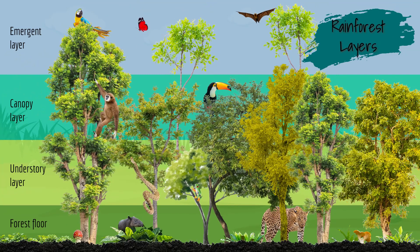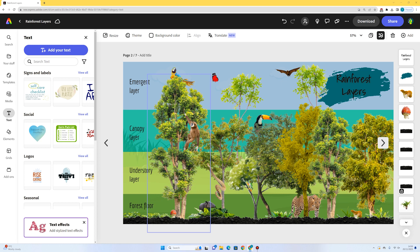There's our rainforest layers diagram. We've got shrubs and the forest floor with dirt along the bottom. In the understory layer we have snakes and a tree frog climbing up a branch. The canopy layer is where monkeys and toucans spend their time. The emergent layer at the top is where trees emerge from the canopy and we find animals like birds, parrots, butterflies, and bats.